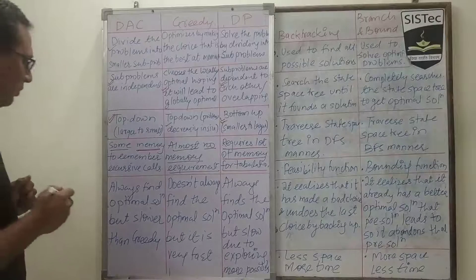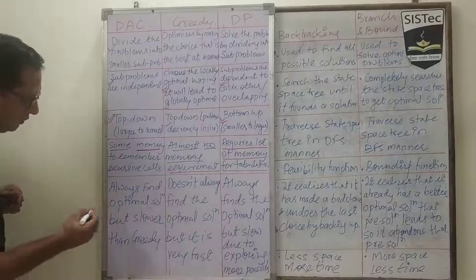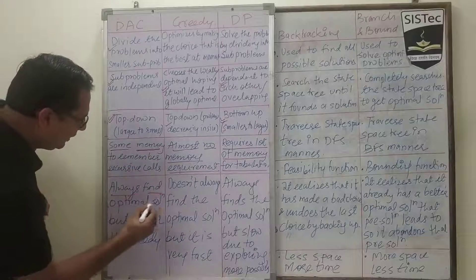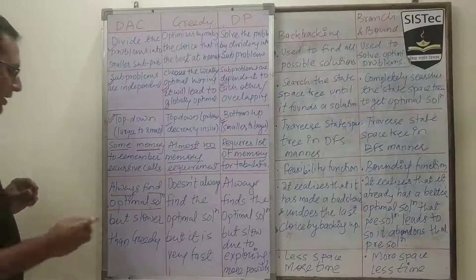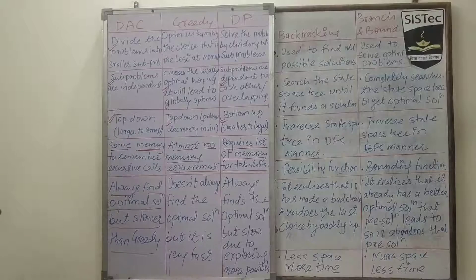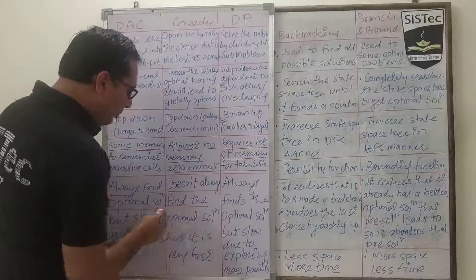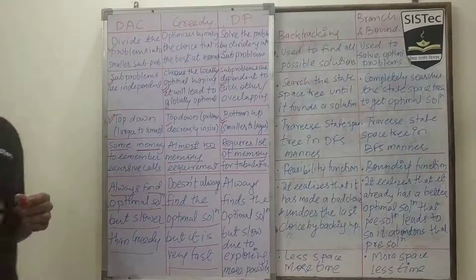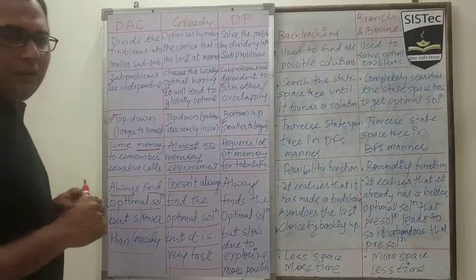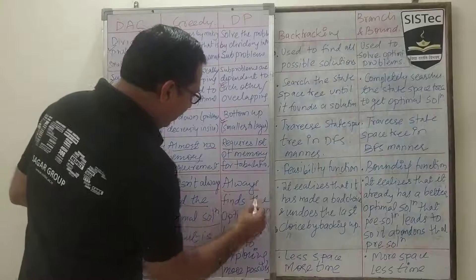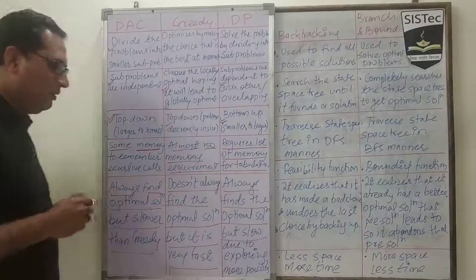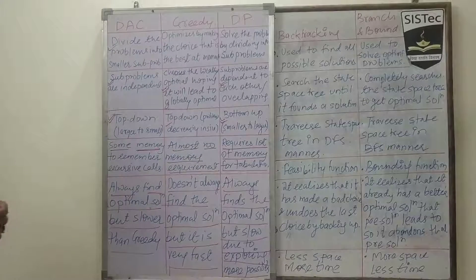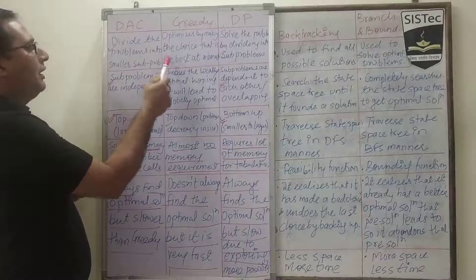Now the last point in terms of optimal solutions — whether we are guaranteed to find one or not. In the case of divide and conquer, it always finds the optimal solution, but in terms of speed it is slower than greedy. Greedy doesn't always find the optimal solution — this is a very important point — but it is the fastest one, as it focuses on taking local best decisions. In the case of dynamic programming, it always finds the optimal solution, but because of exploring all other possibilities, it is the slowest of the three.